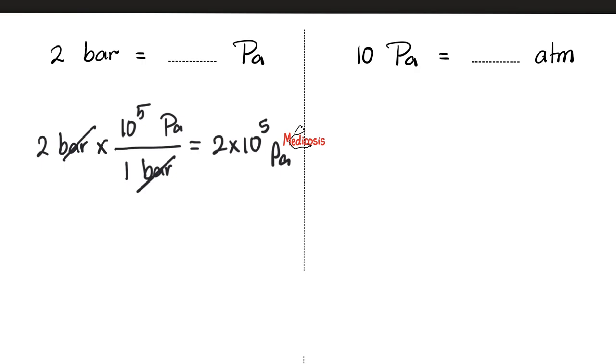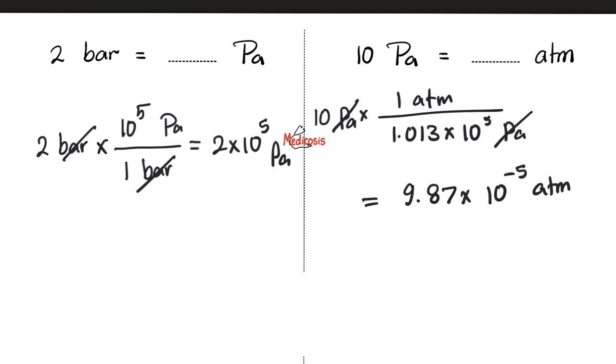How about this one? 10 Pascals equals blank atm. Well, you create your conversion factor. Start with what you have, which is 10 Pascals. And we know that 1 atm is about 100,000 Pascals. So here is 1 atm, and here is about, but not quite, 100,000 Pascals. And then you can cancel Pascal with Pascal. Then you're going to divide. You have 10 in the numerator, and you have all of this in the denominator. Plug this into your calculator. This is about 9.87 times 10 power negative 5 atm as the final answer.